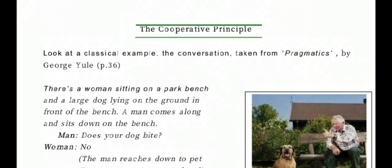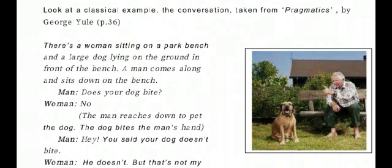Let us look at a classical example first, then jump to the cooperative principle. This conversation is taken from 'Pragmatics' by George Yule, which the author uses to start this unit at page number 36. There is a woman sitting on a park bench with a large dog laying on the ground in front of the bench, and a man comes along and sits down.